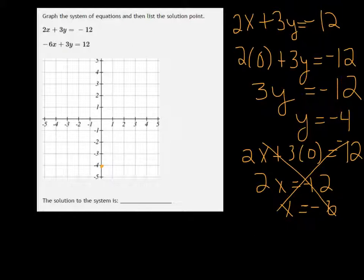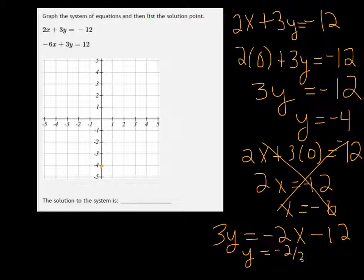It might help if we solve the equation for y. So we get 3y is equal to negative 2x minus 12, and divide everybody by 3. We get that y is negative 2 thirds x minus 4.